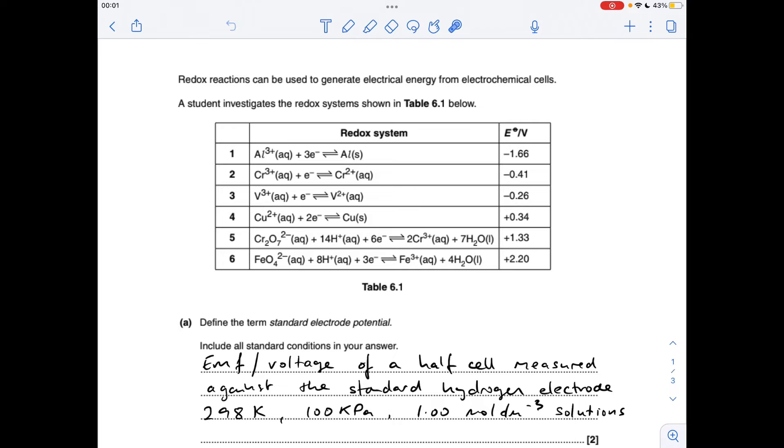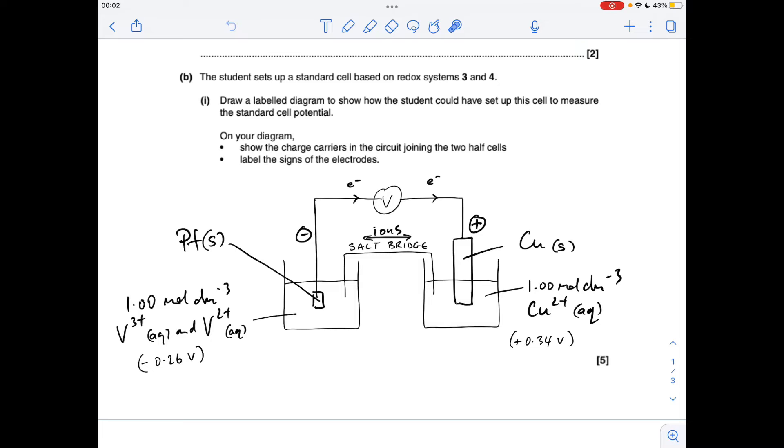Part B - the diagram has a little bit of a twist here. They haven't really asked for the electrons to be drawn in or the ions, so I'll just make sure I explain that very carefully. In terms of the cell, we've got the V3+ 2+ half cell. I've put it on the left - you can put them in either order if you want.